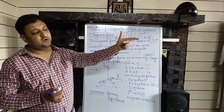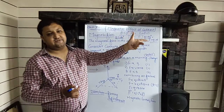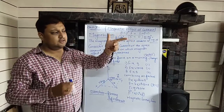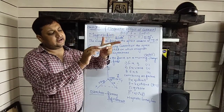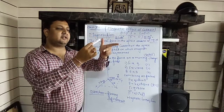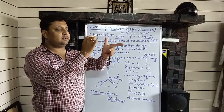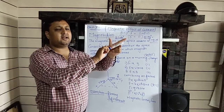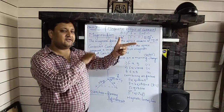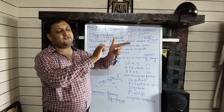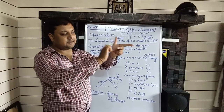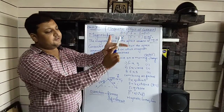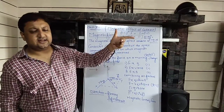You have to stretch your thumb, first finger, and second finger so that all three are mutually at 90 degrees to each other. To remember easily: thumb = Father, first finger = Mother, second finger = Child. Father's F stands for Force — the thumb always represents the direction of force.